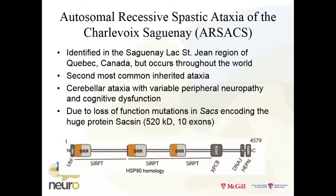It's due to a loss-of-function mutation in the SACS gene encoding a huge protein called SACSIN — unknown before the gene was discovered in ARSACS. It's 520 kilodaltons and 10 exons. It has a UBL domain — UBL domains help direct proteins to the proteasome for ubiquitination. It has SACSIN repeat domains that make it big, SERP domains with homology to HSP90, a DNAJ domain (HSP40-like), and a HEPN domain. Multiple domains indicating it may be important in regulating neurofilament turnover.